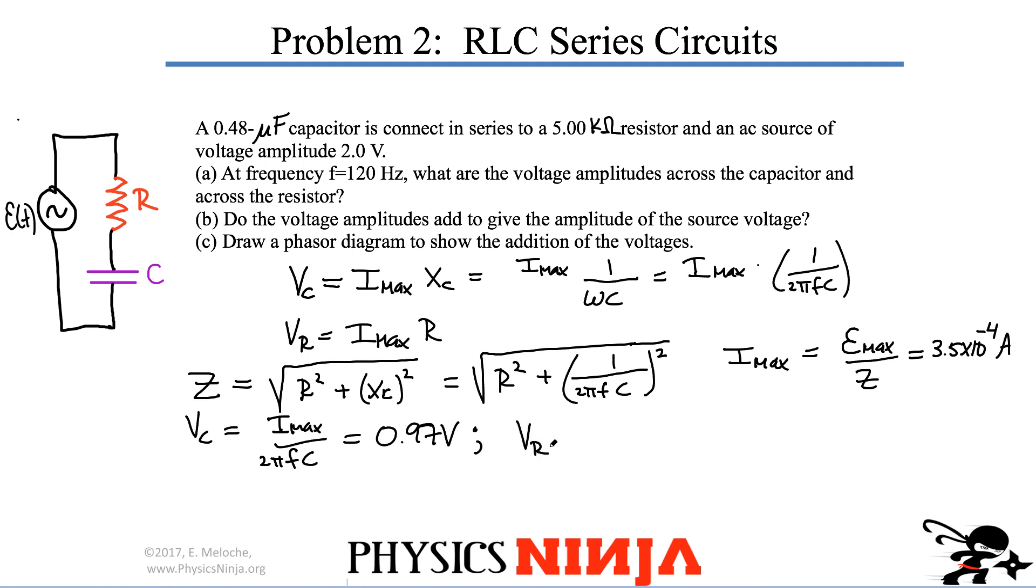The voltage across the resistor, on the other hand. Substitute both numbers in there. The resistance is 5,000 ohms. Imax is what I just calculated. And I get 1.8 volts. So that's it for part A.